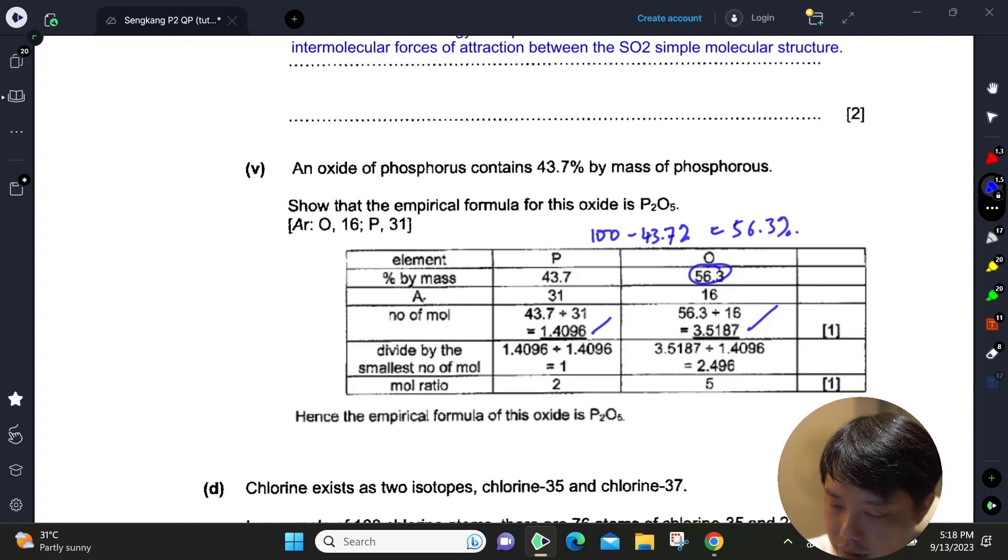Then you get the ratio, approximately. This ratio has got to be an integer, so you've got to multiply it by two across both of them, so you can get a ratio of 2 is to 5. Empirical formula: P₂O₅.